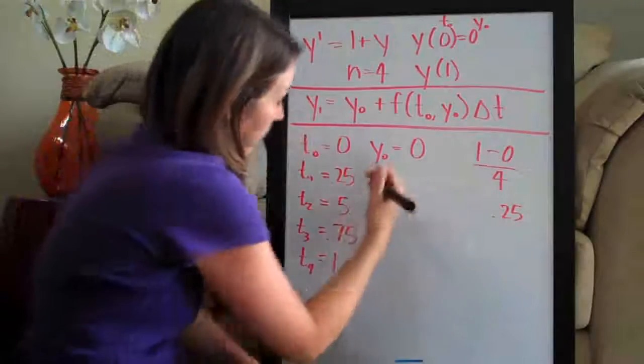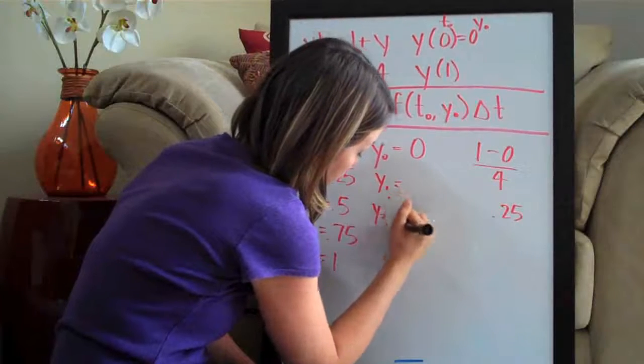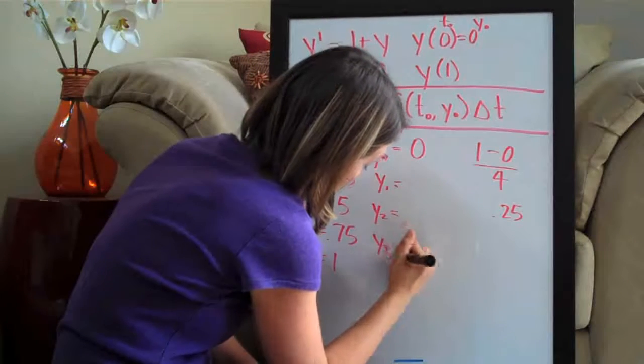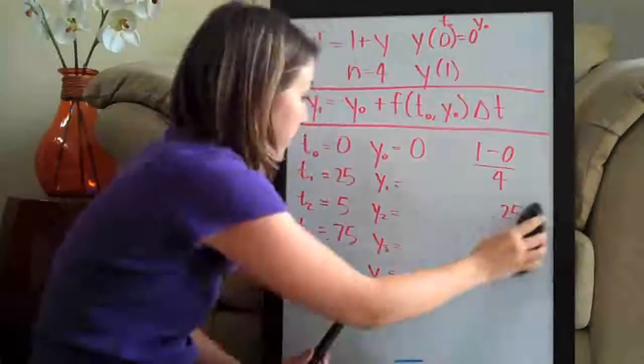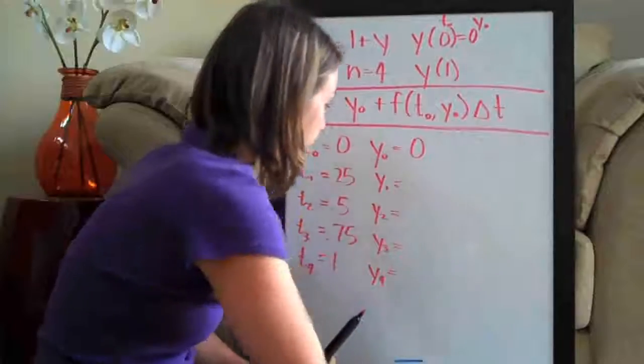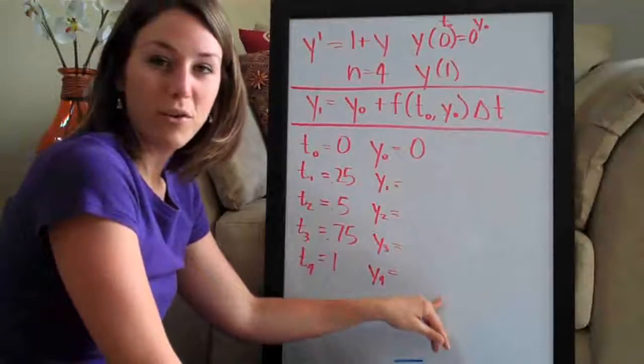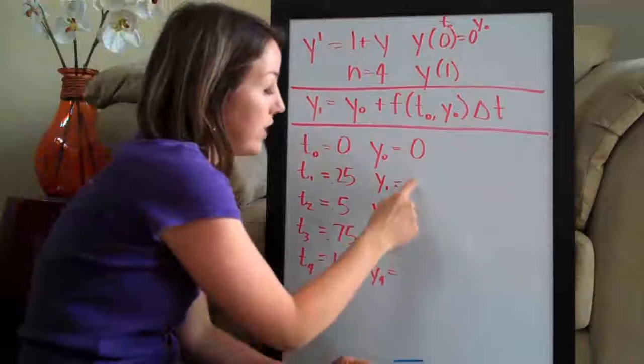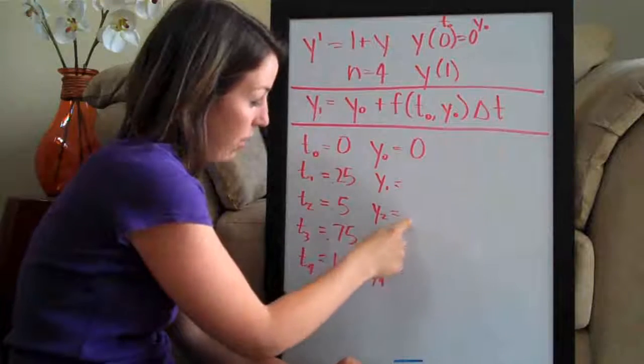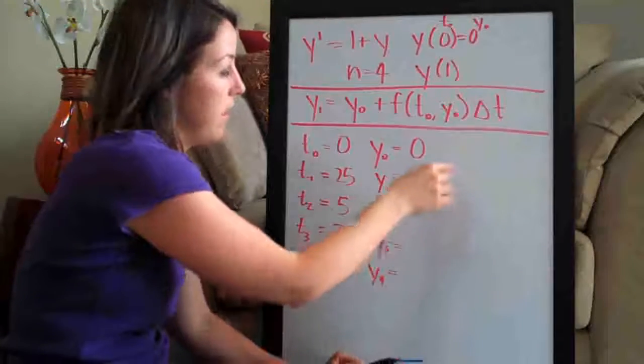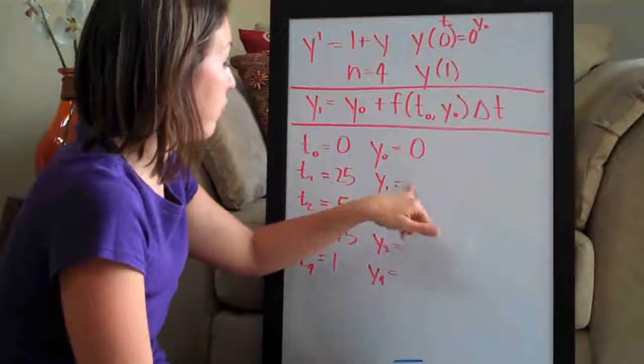Now you need to write your corresponding y values. So y1, y2, y3, and y4. So now that we've got that, we can go ahead and start computing these. You can't just skip straight to y4 and compute it because you need your answer from y1 to plug into this formula here to get y2, to plug into y3. You have to solve these in steps one at a time. So we're going to go ahead and try to find y1.